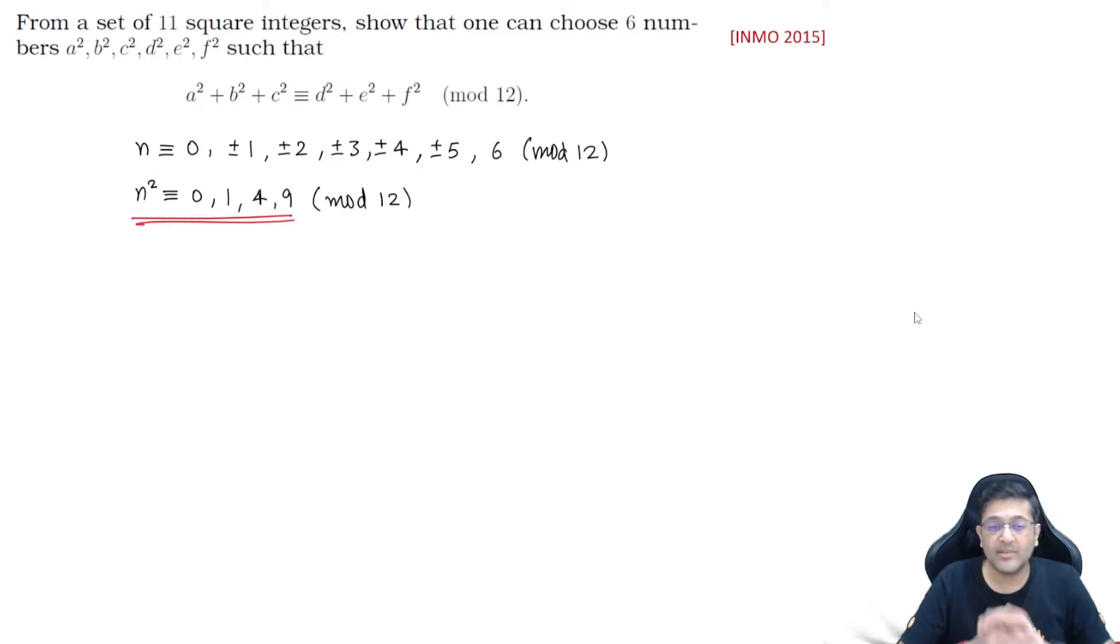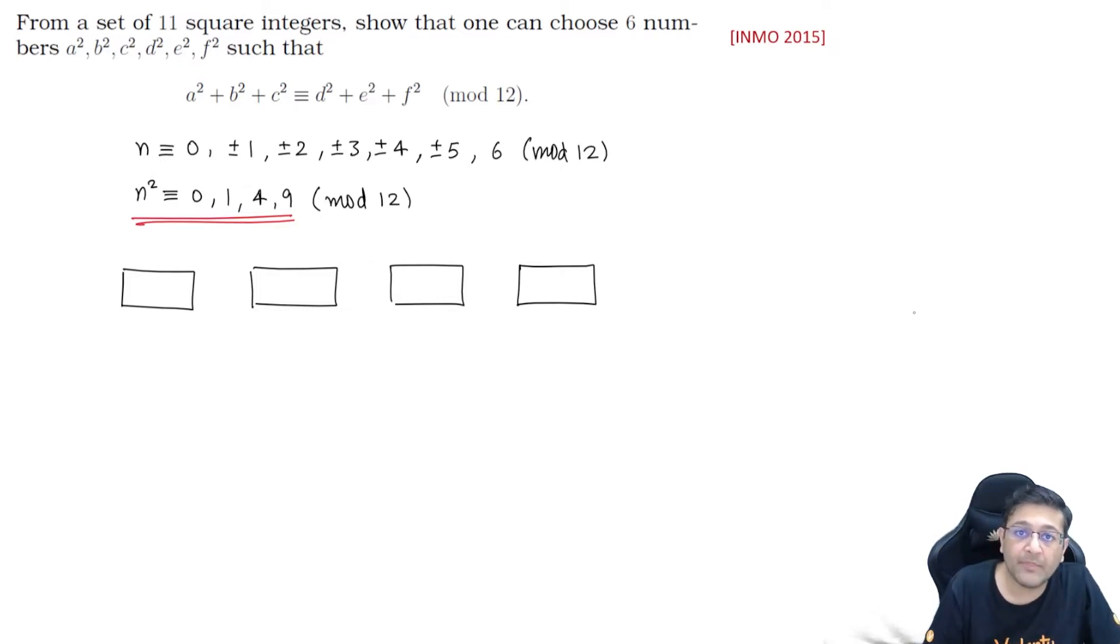So these are the 4 remainders. For any perfect square, you can get only 4 possible remainders: 0, 1, 4, and 9 when divided by 12. Now we can apply pigeonhole principle to this question in quite a simplified manner. Let's assume there are 4 remainders: 0, 1, 4, and 9. Consider them to be holes. And since 11 integers are there, 11 square integers, consider them to be pigeons.